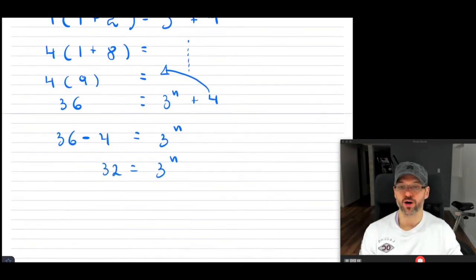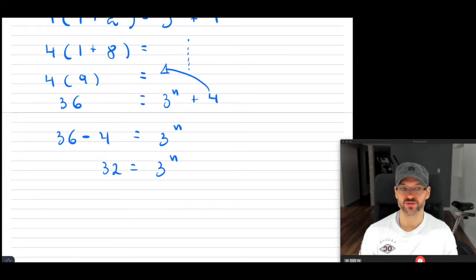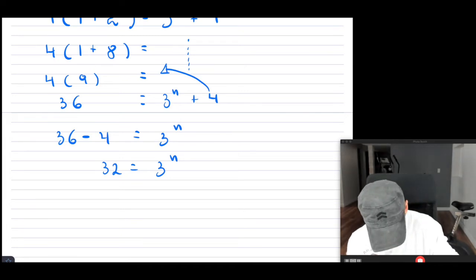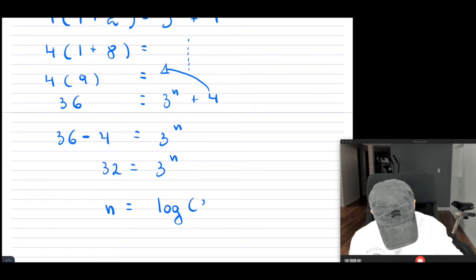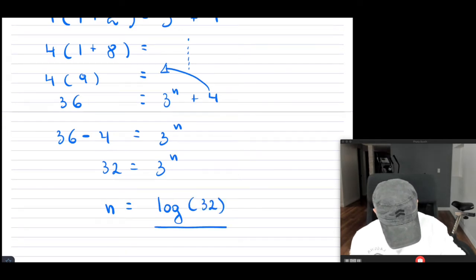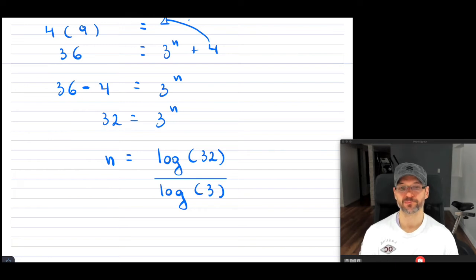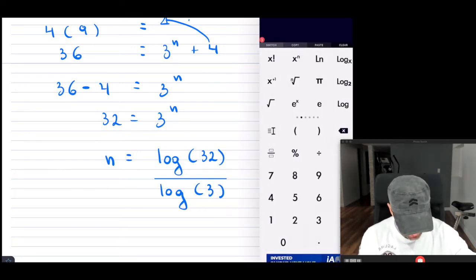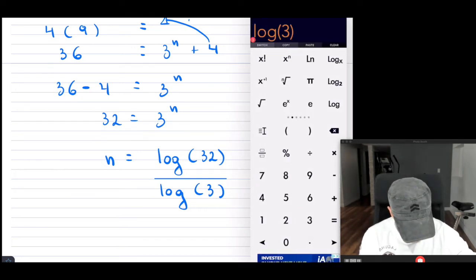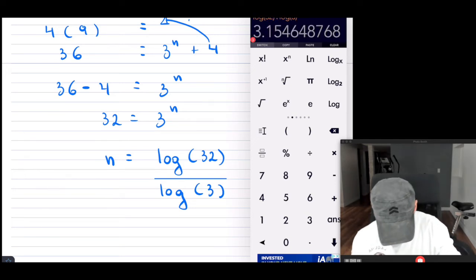Now, using log, so once you get to this point where it's only a base to the exponent, so I have n equals log of the answer, which is 32, divided by the log of 3. So we're basically taking log of both sides here. And now, so my answer would be log of 32 divided by log of 3.